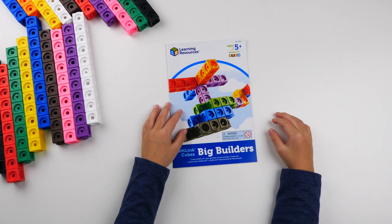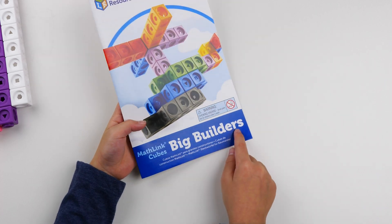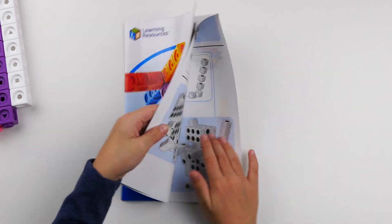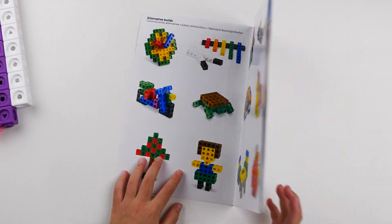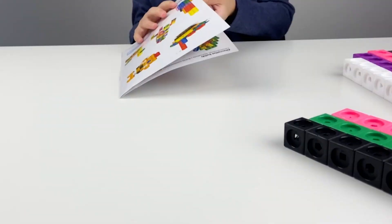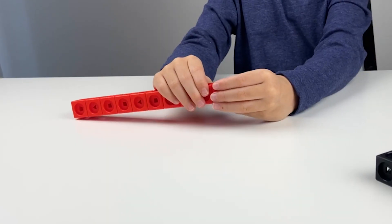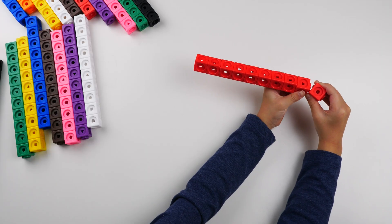So here's the book. The book has the big builders. So inside, this is where you can all build. You can build these things. But we are not going to build these today. We are going to build number blocks 1 to 10.